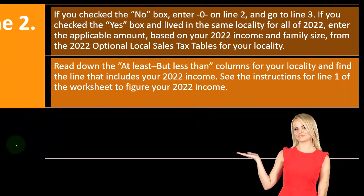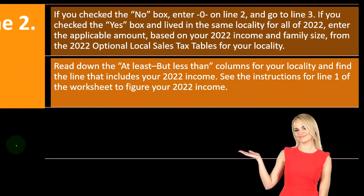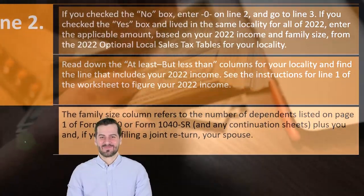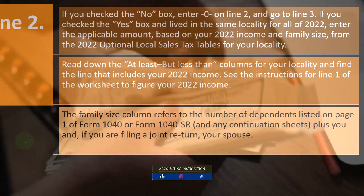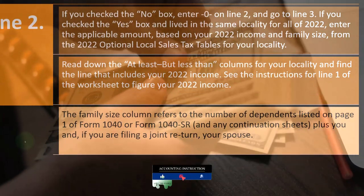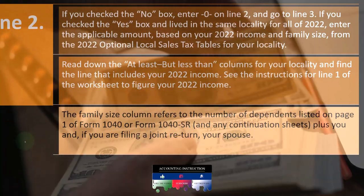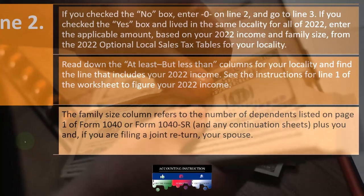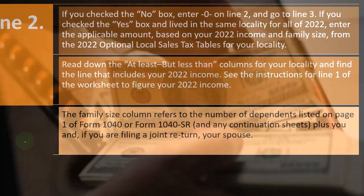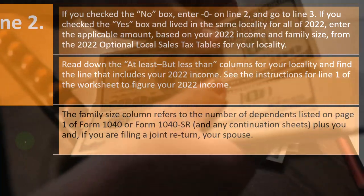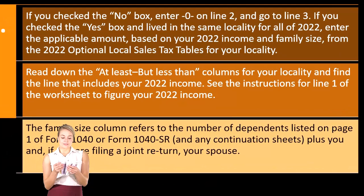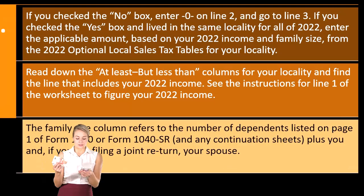Read down the 'at least but less than' columns for your locality and find the line that includes your 2022 income. See the instructions for line one of the worksheet to figure your 2022 income. The family size column refers to the number of dependents listed on page one of Form 1040 or Form 1040-SR, plus your spouse if filing a joint return. These worksheets take locality and family size into account to estimate an average sales tax deduction.